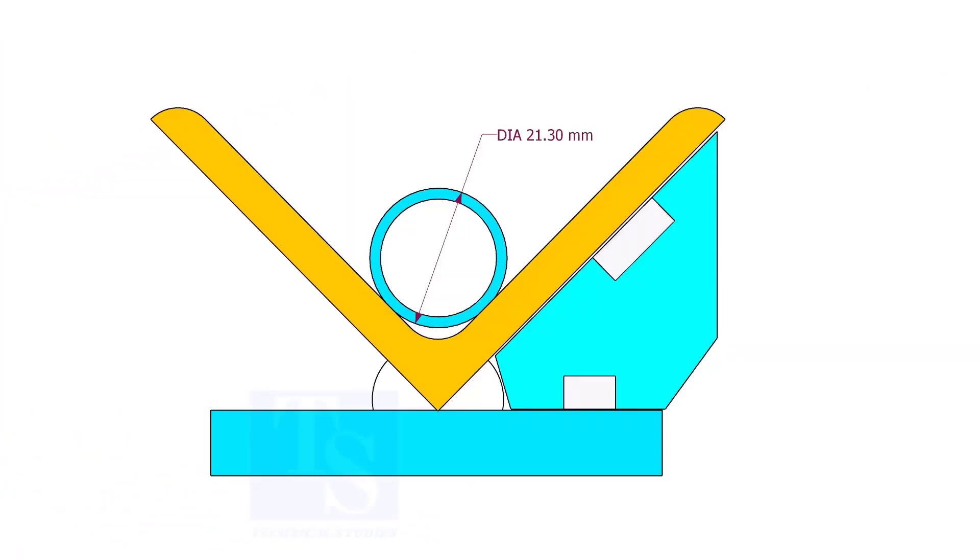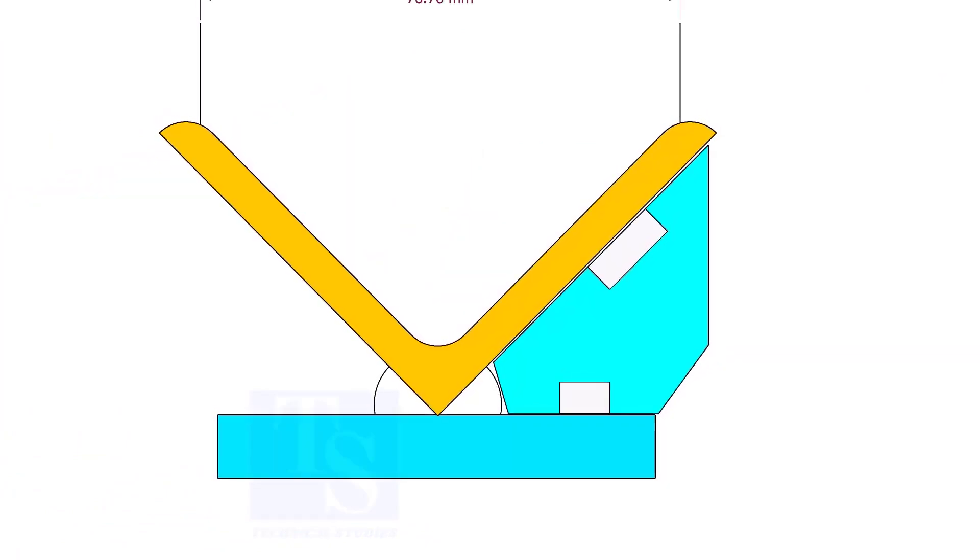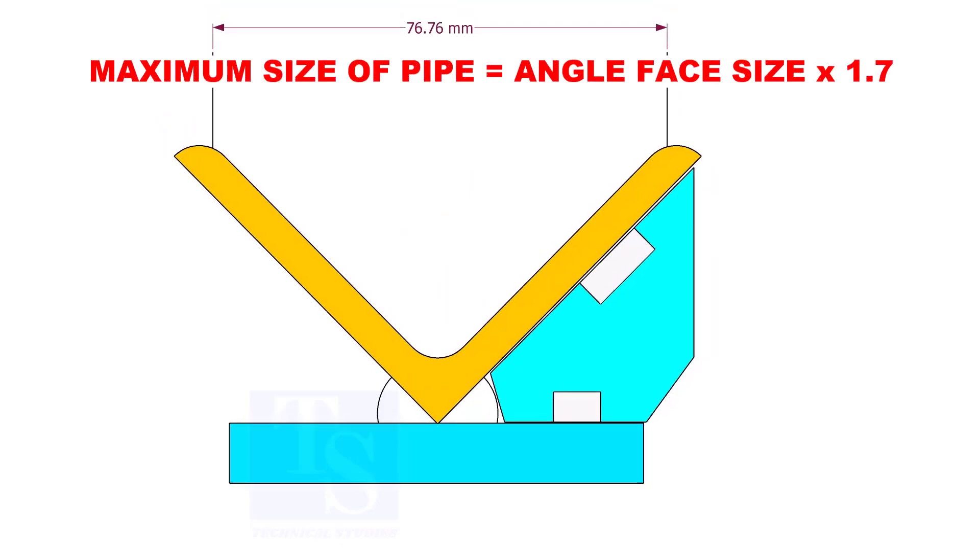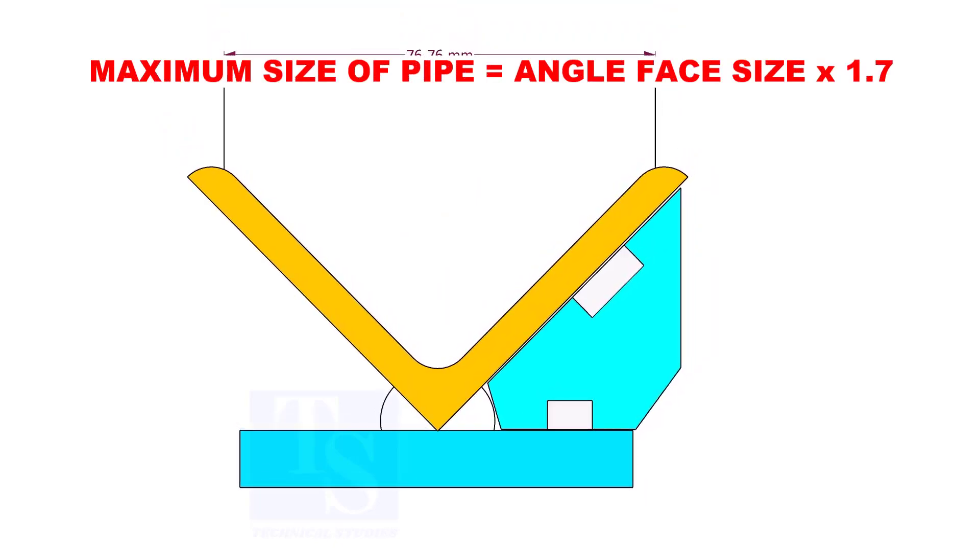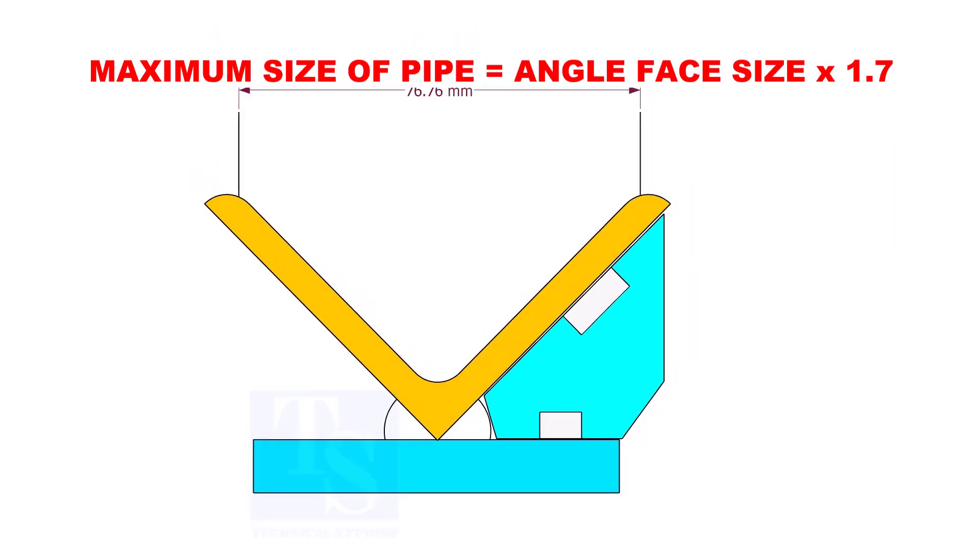In this angle jig, you can fit up any small size pipes. The maximum size of the pipe shall be determined by multiplying the width of the angle face by 1.7.